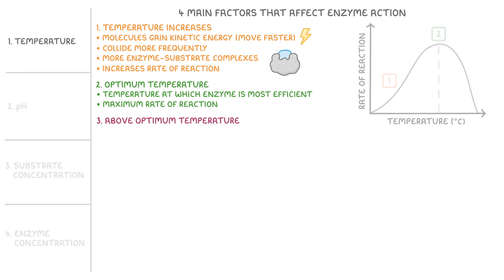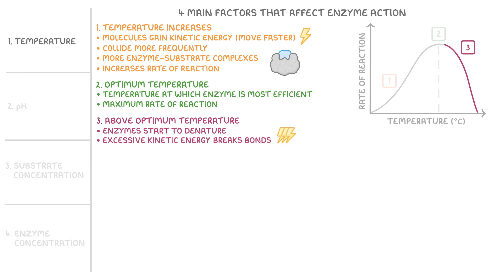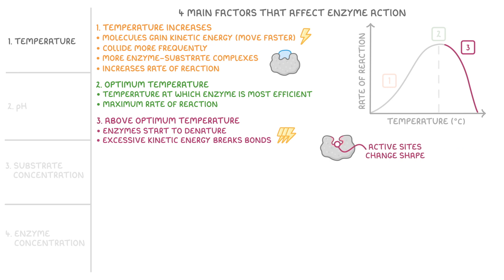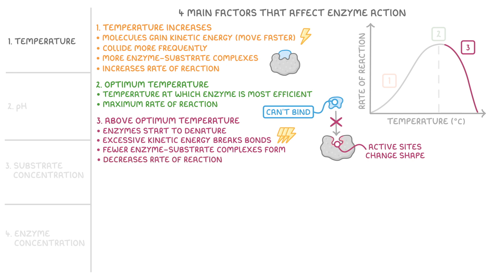Above the optimum temperature, the enzymes start to denature. This happens when excessive kinetic energy breaks bonds and causes enzymes to begin to lose their shape. And when the active sites change shape, they can't bind to substrates anymore. So fewer enzyme-substrate complexes form, and one by one the enzymes gradually stop working. Overall, this decreases the rate of reaction until there are no functional enzymes left.